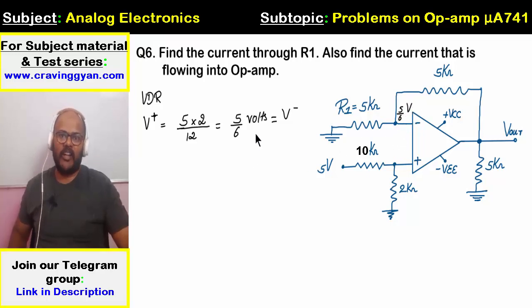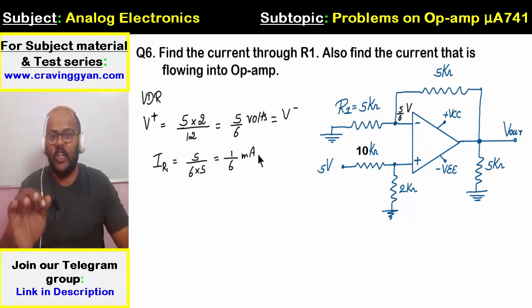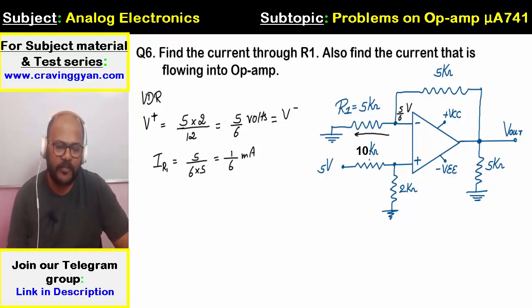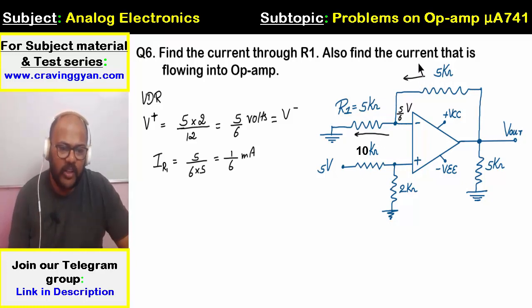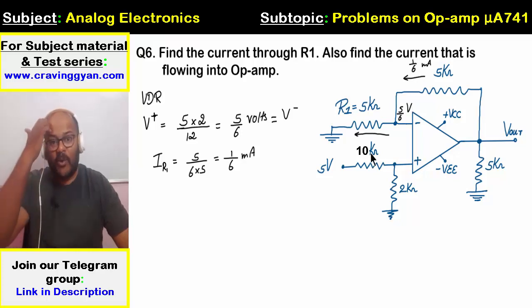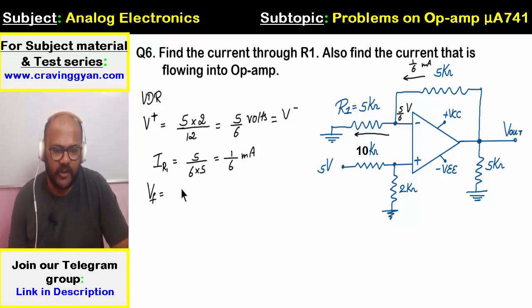The current through R1: I_R1 = (5/6V) / 5k = 1/6 milliampere, flowing from right to left. This same current flows through the feedback resistor. The voltage drop across the feedback 5k resistor: VF = (1/6 mA) × 5k = 5/6 volts.